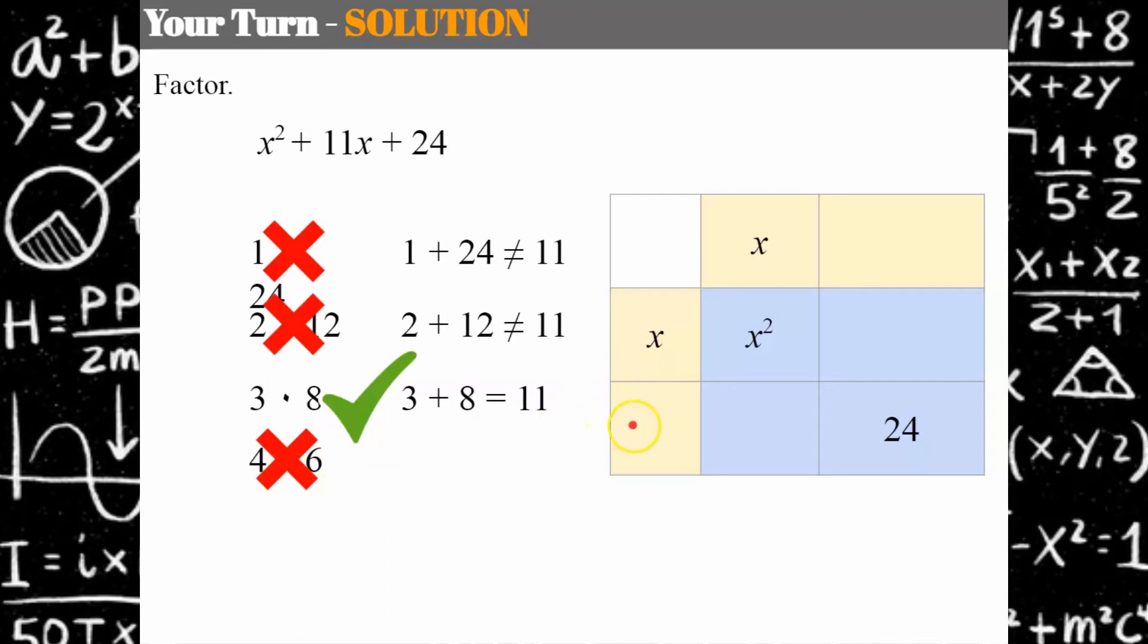Let's go over to our table and put the factors 3 and 8 in. Then we can fill in the cell 8x and 3x. 3 times 8 does equal 24, and 3x plus 8x is 11x. So it checks. Factored is x plus 3 multiplied by x plus 8.